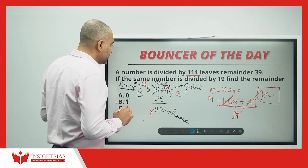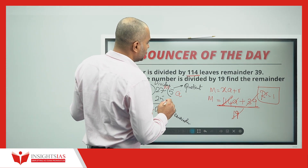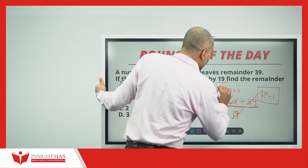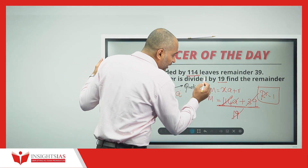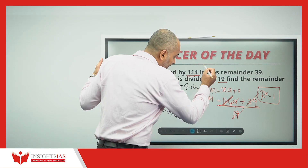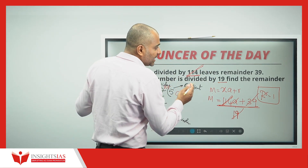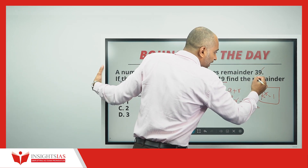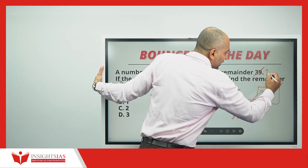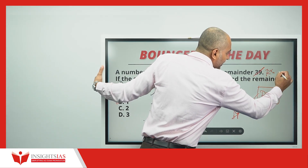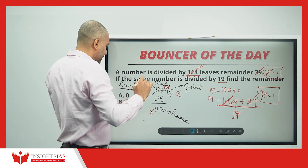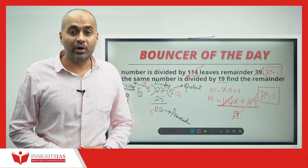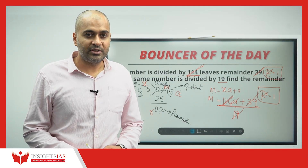In a very simple way, just check whether 114 is divisible by 19. If it is, then check whether 39 is divisible by 19. If not, whatever remainder you get from 39 ÷ 19 is your answer. The answer is 1. Most of you have given the correct answer in the comment section.